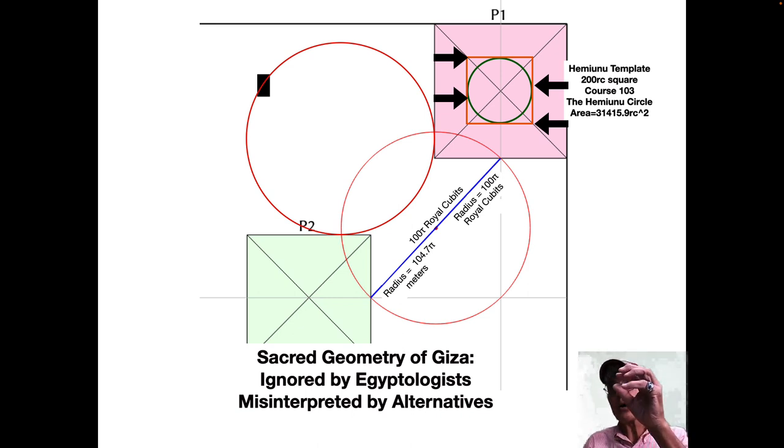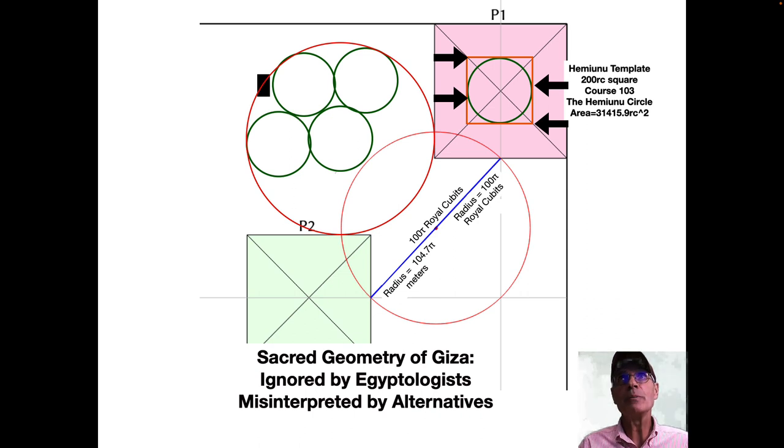So Hemayunu, the architect is pointing out this square, but look, it's also a circle because you could inscribe a circle in it. So if you put the Hemayunu template circle right there in the center of this circle that we found through the 100 tau royal cubit line, mathematically seven of these Hemayunu templates fit perfectly inside that larger circle.